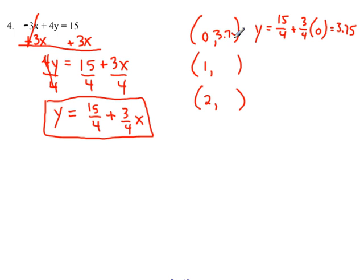And we'll leave it 3.75. Plug in 1, 15 fourths plus 3 fourths times 1 is going to give you 18 over 4, which is 4.5.